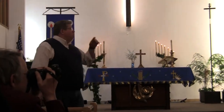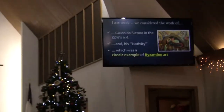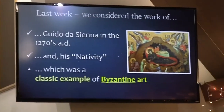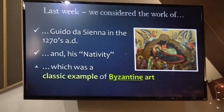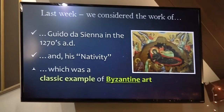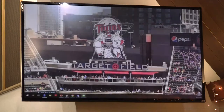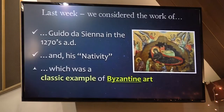So last week we considered the work of Guido da Siena in the 1270s AD. We looked at his painting of the Nativity, which was a classic example of what we talked about last week — what was called Byzantine art.